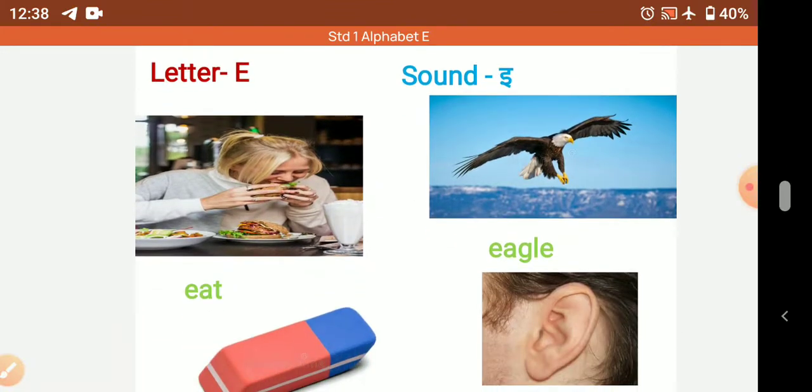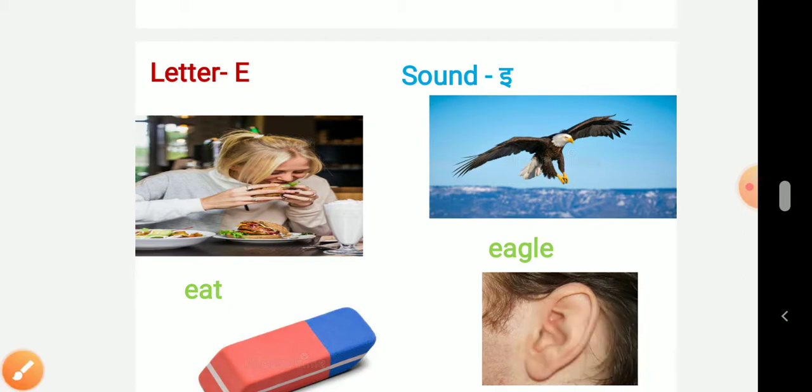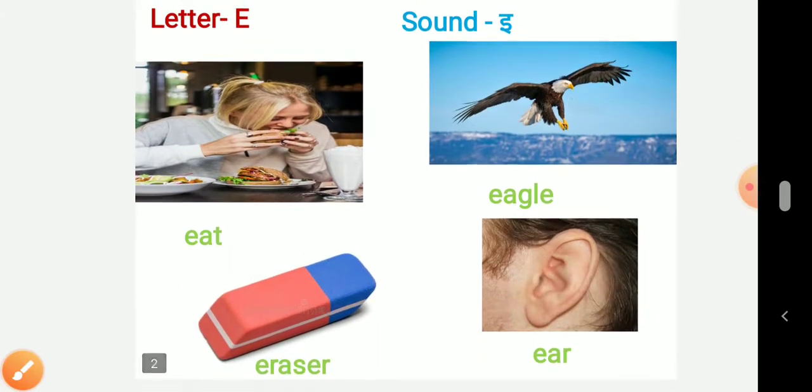Now here we can see letter E. E has four different sounds. Now we are going to see those. Here letter E and here the sound is E. The sound is E. So let's see the words.